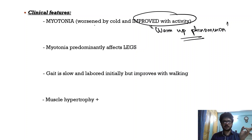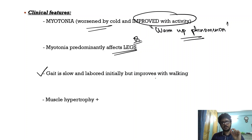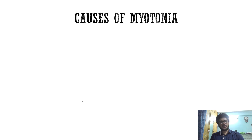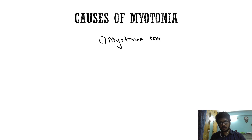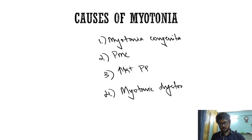This myotonia predominantly affects the lower limbs, causing a slow labored gait initially that improves with walking due to the warm-up phenomenon. Patients can also have muscle hypertrophy. The important neurological conditions presenting with myotonia are: myotonia congenita (Thomsen and Becker disease), paramyotonia congenita, hyperkalemic periodic paralysis, and myotonic dystrophy.